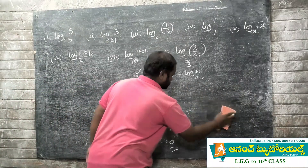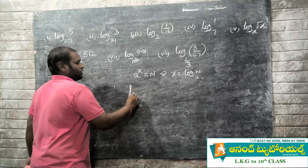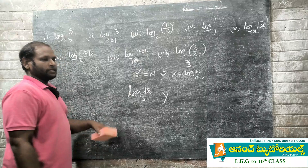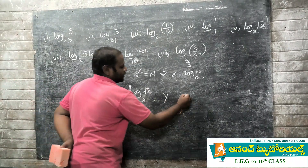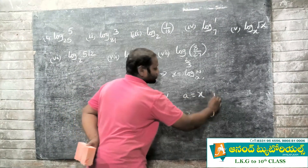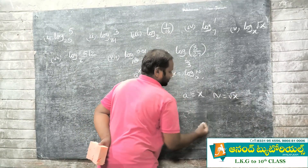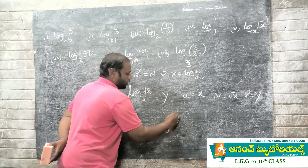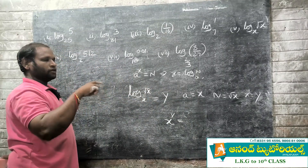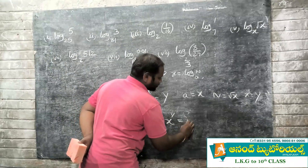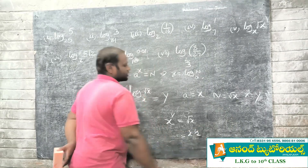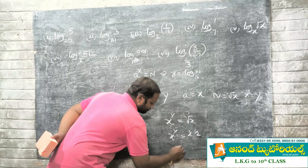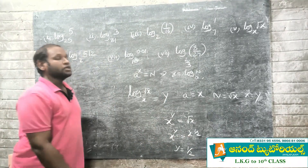Next problem: log base x of √x = y. We have a = x, N = √x, so x^y = √x. Now √x = x^(1/2), so x^y = x^(1/2). Since the bases are equal, therefore y is equal to 1/2.